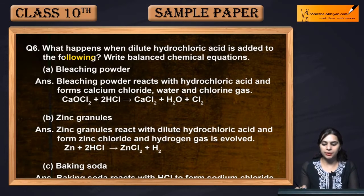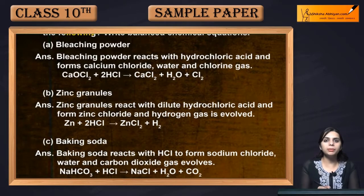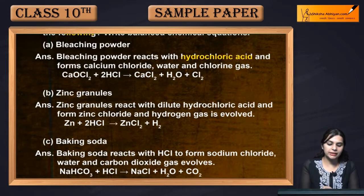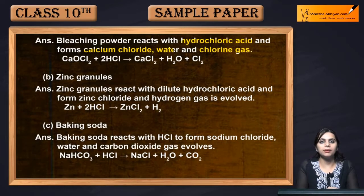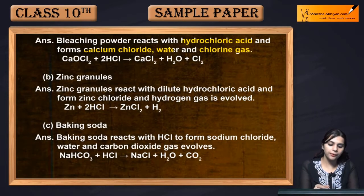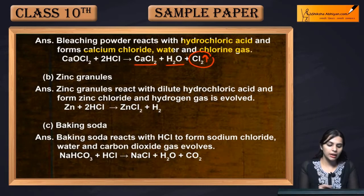First is bleaching powder. Bleaching powder reacts with hydrochloric acid and forms calcium chloride, water, and chlorine gas. When bleaching powder reacts with HCl, the products are CaCl2 (calcium chloride), water, and chlorine gas is liberated.